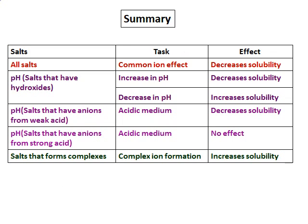This slide summarizes everything learned: the type of salt and its effect on solubility under different conditions. For all salts, the common ion effect decreases solubility. For hydroxide salts, increasing pH decreases solubility and decreasing pH increases solubility. For salts with anions from weak acids — such as calcium fluoride or barium cyanide — solubility increases in acidic medium. For salts with anions from strong acids, such as calcium chloride, acidic medium has no effect. Finally, complex ion formation increases solubility for all applicable salts.